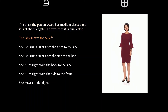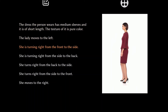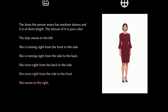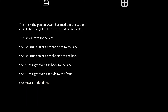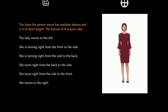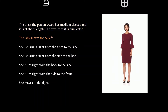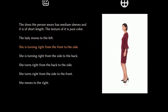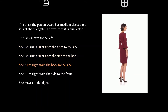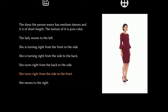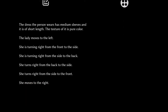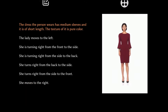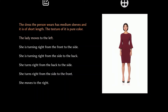Text2Performer is a new text-driven human video generation framework. The aim is to handle consistent human representation and complex human motions, and it is doing it quite well. Given text describing appearances and motions, Text2Performer is able to generate temporally consistent human videos with complete human structures and unified human appearances.